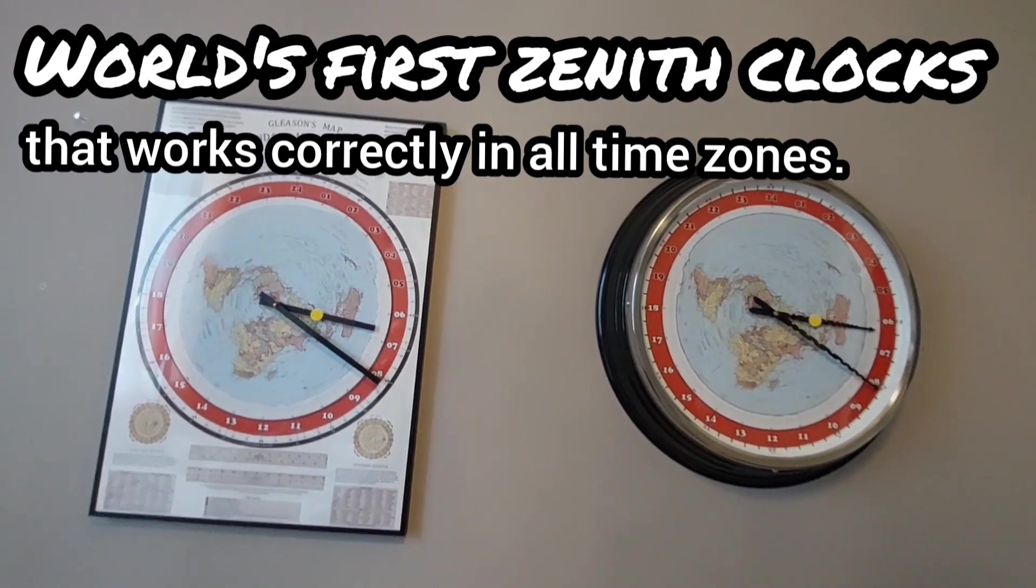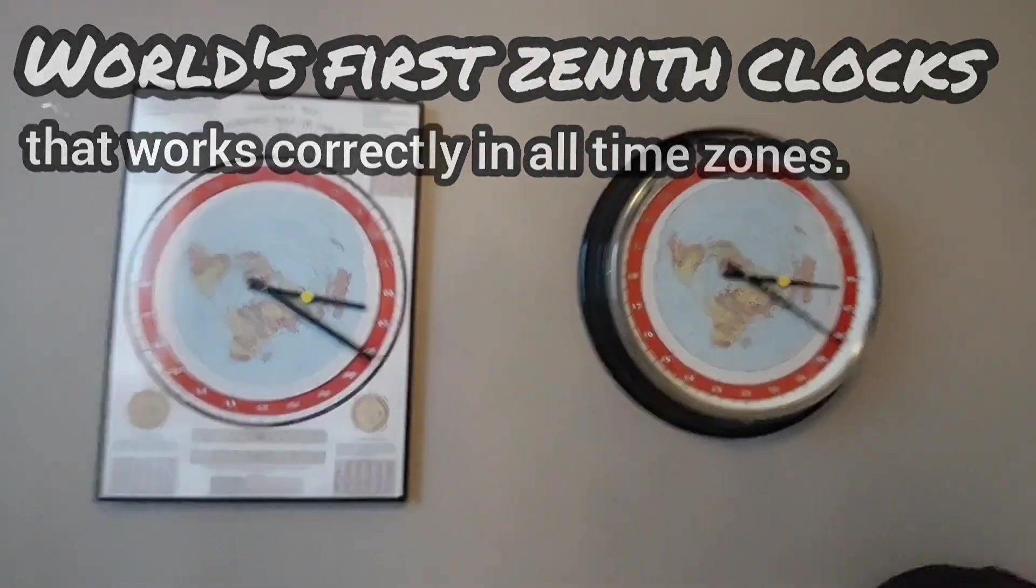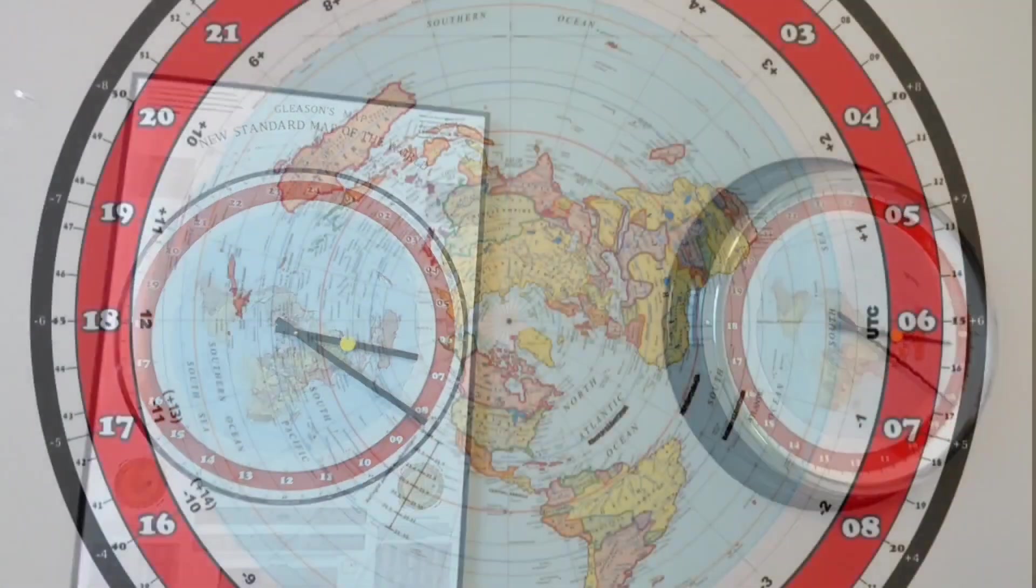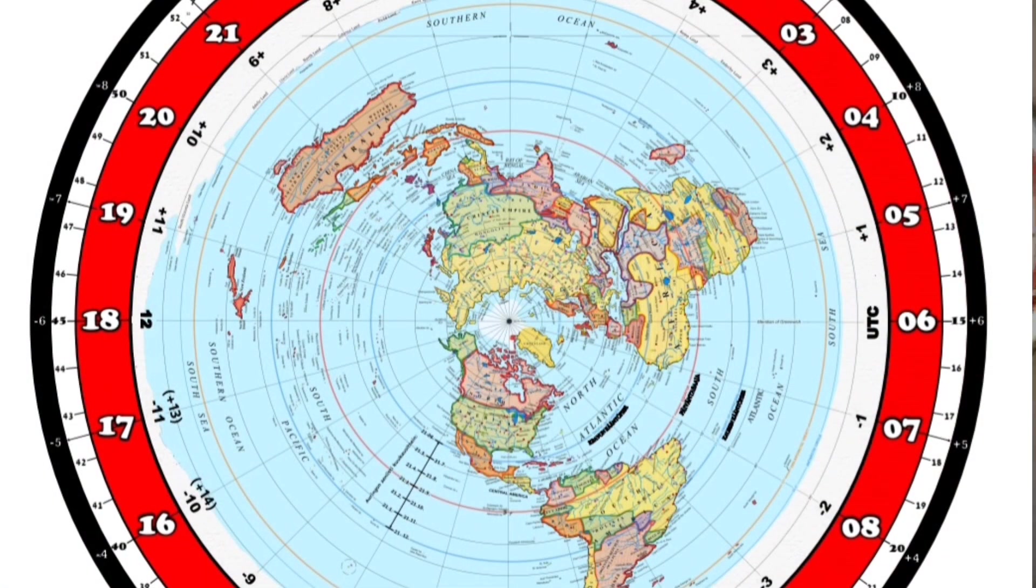These are the world's first zenith clocks that work correctly in all time zones. Clocks are equipped with a 24-hour mechanism. They have a world map as the dial. Map is azimuthal equidistant projection, alias AE map.